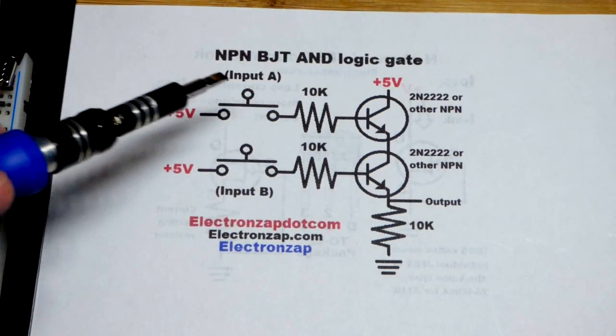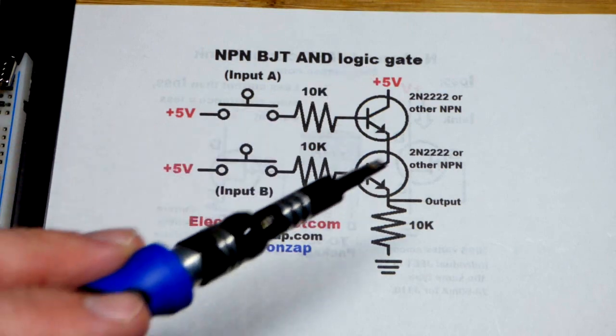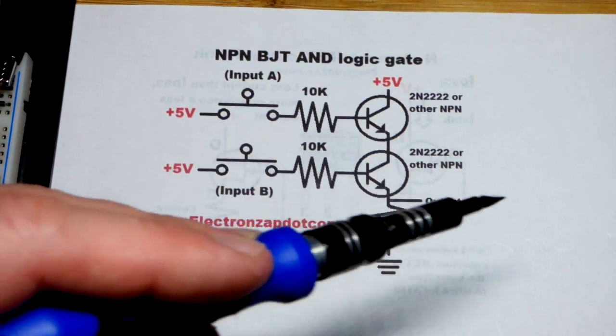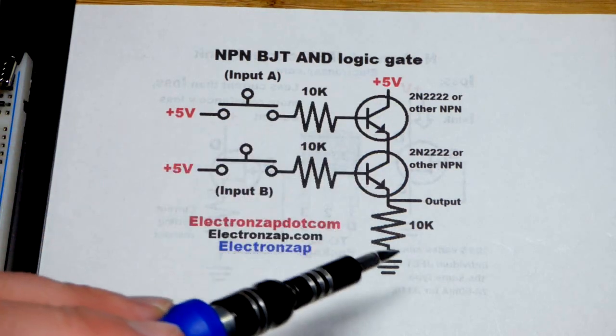So now in this video, we're going to look at an NPN bipolar junction transistor version of the AND logic gate. We're going to have an output, an LED that can only be turned on if both of these transistors are turned on.